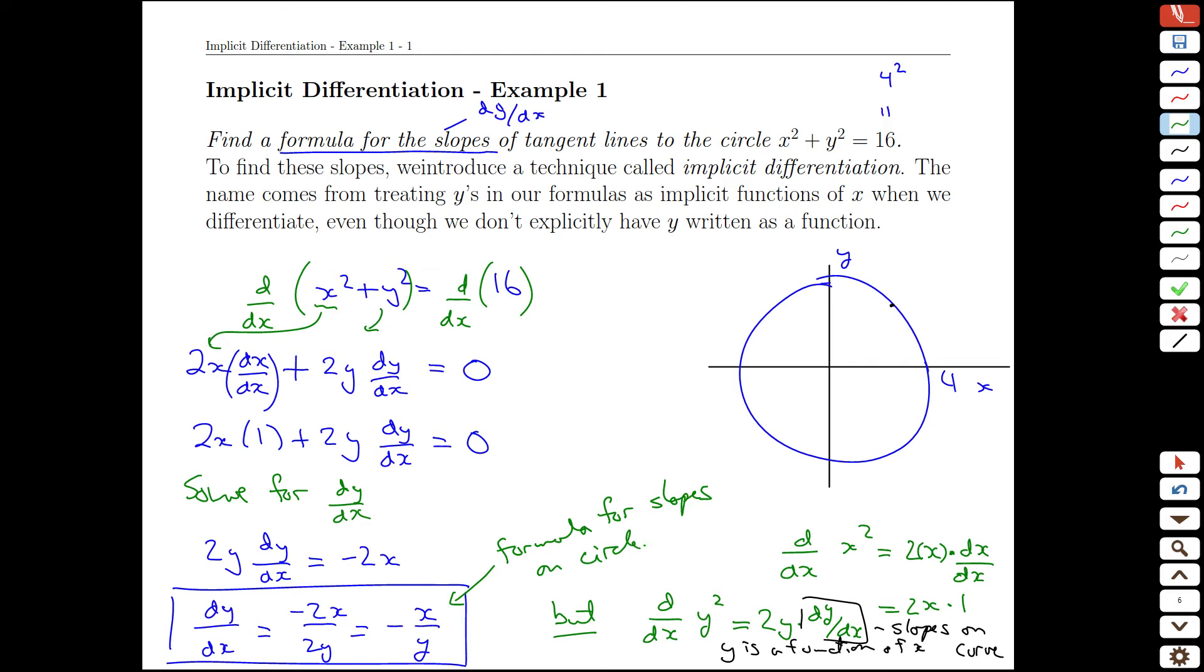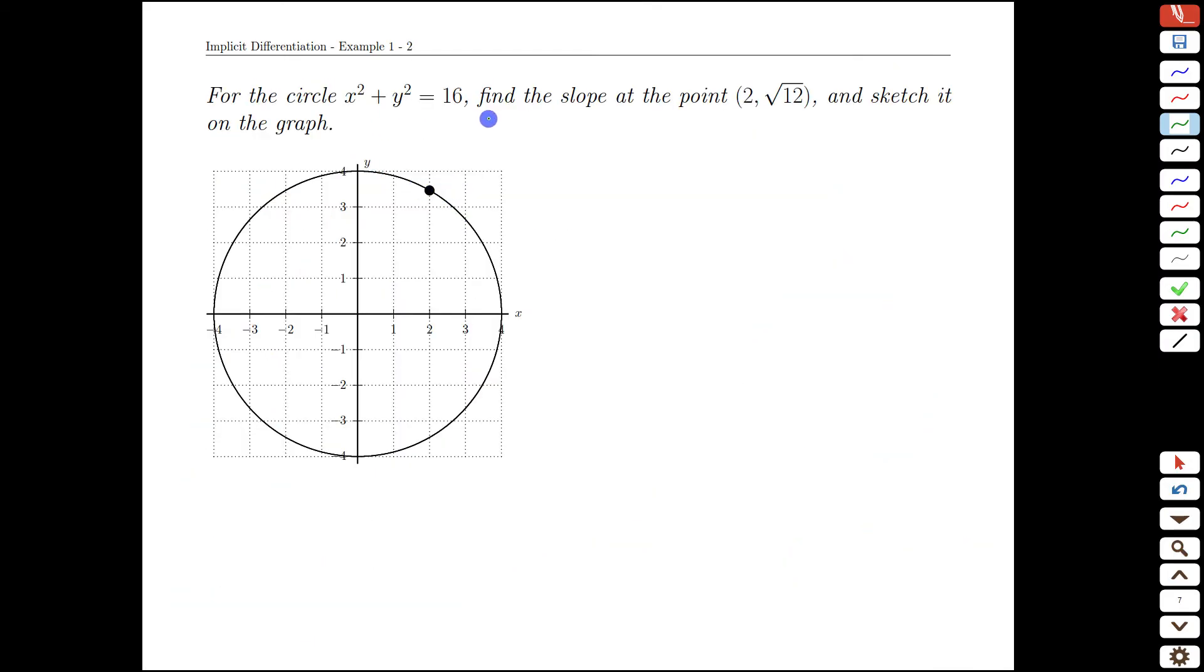Let's follow that up with some calculations for a specific point and see if it actually is working the way we expect. Here's that same circle again and we're going to pick the point 2 root 12.